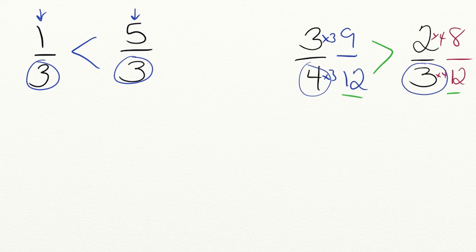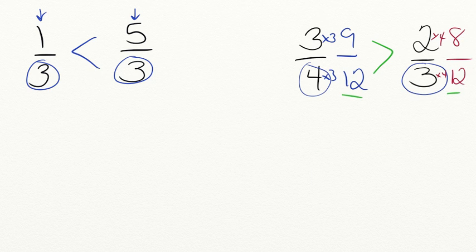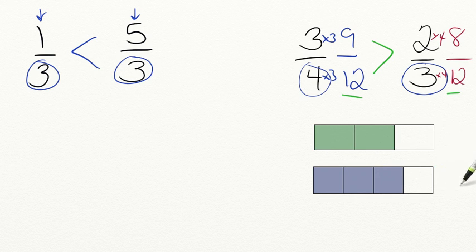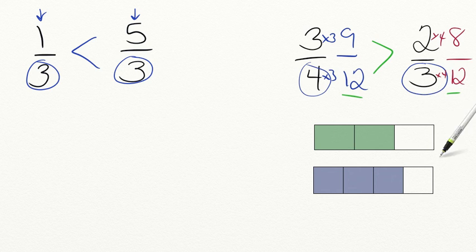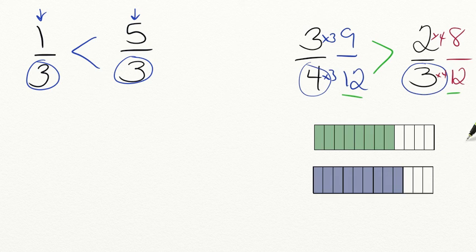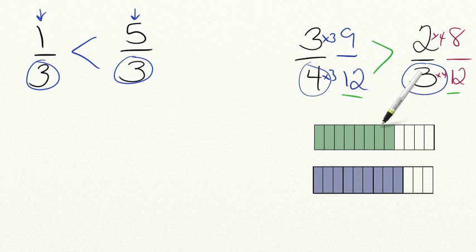Let's check our work using visuals. We have two fraction bars — one representing two-thirds and one representing three-fourths. Visually it does look like three-fourths is greater than two-thirds. If we split both fraction bars into twelfths, which is the common denominator we found, we can confirm that nine-twelfths is greater than eight-twelfths.